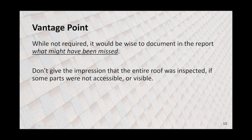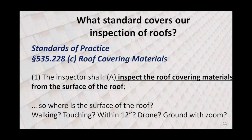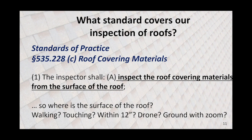What does our standard cover specifically about inspections of the roof? Number one — and this brings up a lot of fun discussion — the inspector shall inspect the roof covering materials from the surface of the roof. It does not say the inspector will walk the roof. It says the inspector must inspect the roof covering materials from the surface of the roof. So now the discussion: what is the surface of the roof? Do I have to walk it to be at the surface? Can I just touch it and consider myself at the surface?